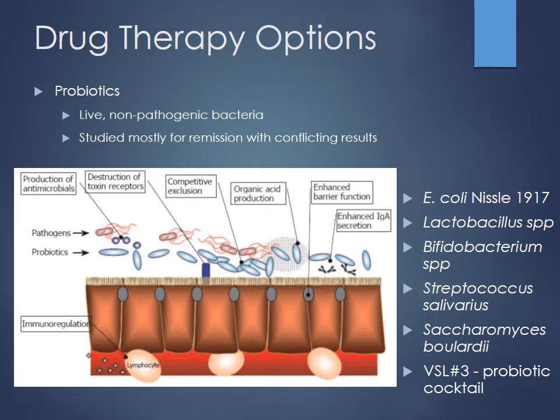Probiotics are live non-pathogenic bacteria. The evidence base isn't as strong as for monoclonal antibodies or immunosuppressants, but there are various options — certain E. coli strains, Lactobacillus, and Saccharomyces, which can also be obtained from yogurt. They may help regulate GI flora, and for patients with excessive diarrhea, they can be a reasonable adjunctive option since the risk of harm is low.